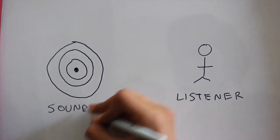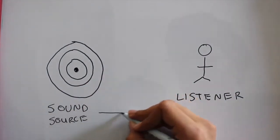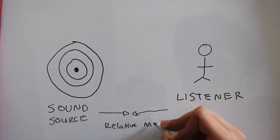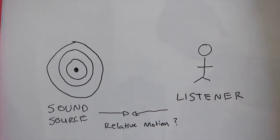If there is some relative motion between these two, if either the sound source or the listener begins moving, then we're going to perceive some effects in the sound waves. What are those effects? Well that's a good question.